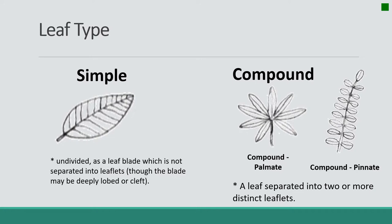Leaf types — we have two: simple and compound. Simple leaves are undivided leaf blades, which are not separated into leaflets. Compound are leaves separated into two or more distinct leaflets. We have two different forms of compound leaves: compound palmate and compound pinnate.